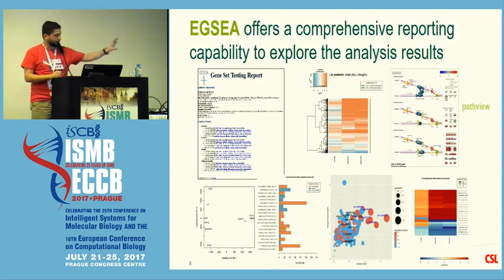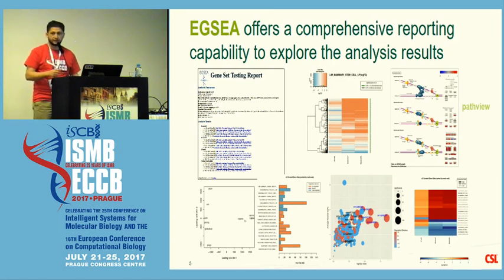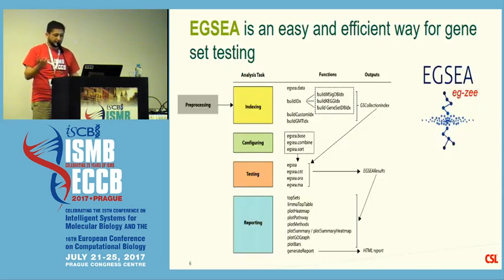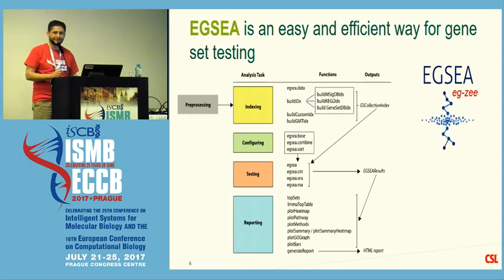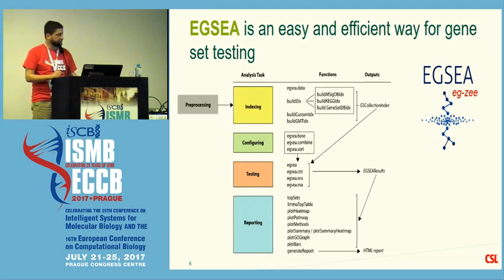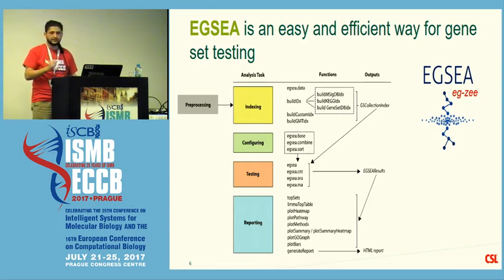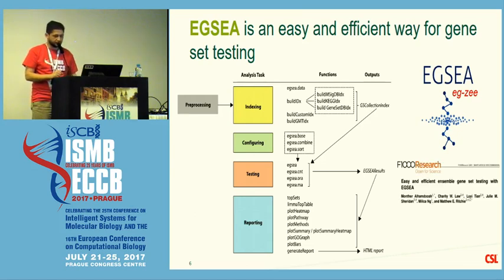We also generate summary bubble plots and bar plots at the experimental level, so you get ready-to-use visualizations you can copy and paste directly into your publications. Importantly, we also generate an MDS plot where you can see how the base methods perform and whether you have a consensus — and in most cases you will not. To run EGSEA, it's very straightforward: four simple steps. We tried to make it simple because most users are non-computer-science scientists. You build and index your gene set collections, configure the analysis settings, run the testing, and generate the report.